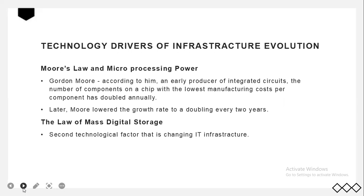The first driver is Moore's Law and microprocessing power. In 1959, the first microprocessor chip was introduced. Gordon Moore, director of Fairchild Semiconductor's research and development laboratories and an early producer of integrated circuits, observed that the number of components on a chip with the lowest manufacturing cost per component had doubled annually. This became the basis of Moore's Law, and Moore later lowered the growth rate to a doubling every two years.